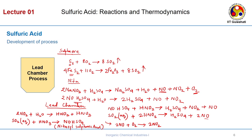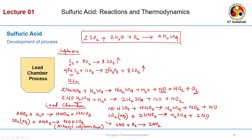Sulfur dioxide in the aqueous phase reacts with nitrous oxide to form sulfuric acid plus 2 NO. This NO escapes from the reaction liquor and reacts with oxygen present in the chamber: 2 NO + O2 → 2 NO2. So NO is regenerated — overall there is no net consumption of NO, confirming that NO acts as a catalyst. The overall reaction for the lead chamber process is: 2 SO2 + 2 H2O + O2 → 2 H2SO4. Some plants are still using this lead chamber process today.